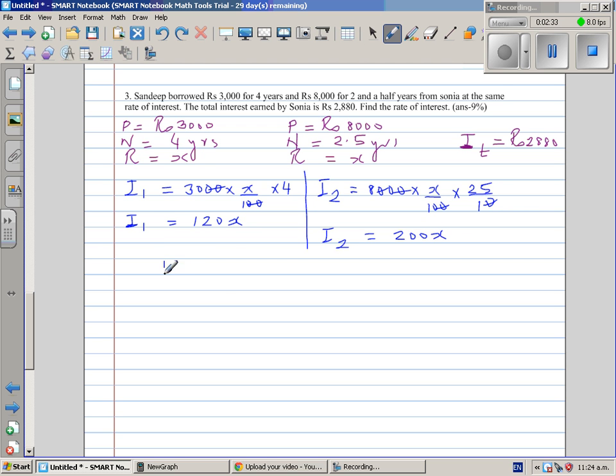I1 plus I2, interest in the first situation plus interest in the second situation, equals the total interest. So this is a simple linear equation: 120x plus 200x equals 2,880. This is 320x equals 2,880. Dividing both sides by 320.